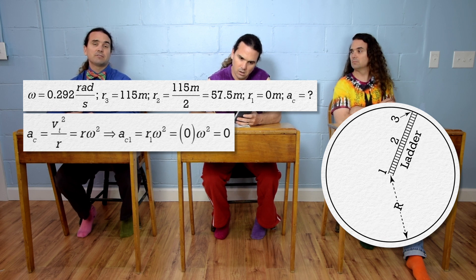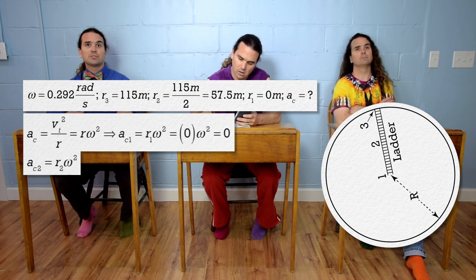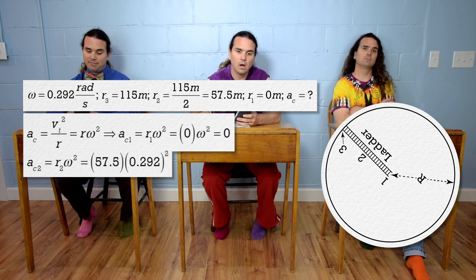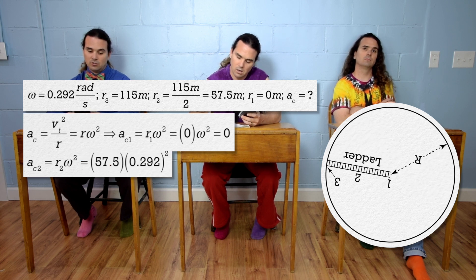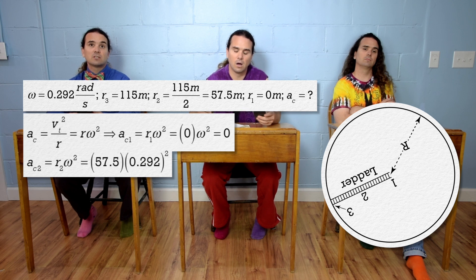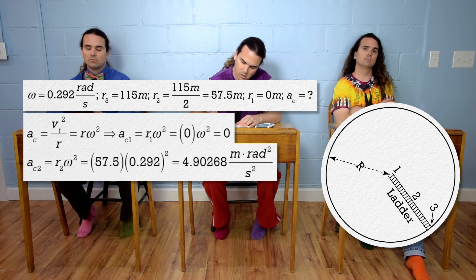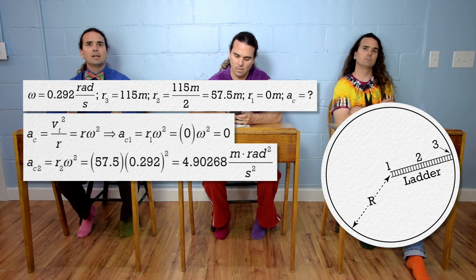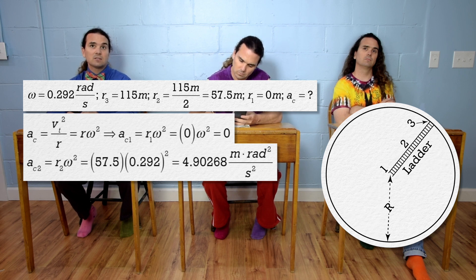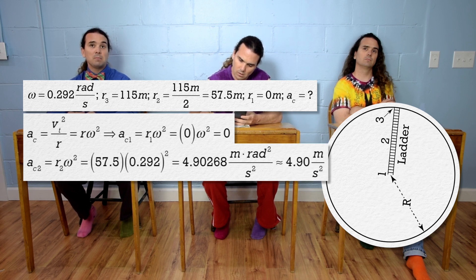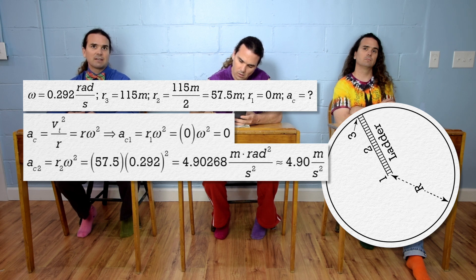The centripetal acceleration for part 2 equals 57.5 times 0.292 squared, which is 4.90268 meter radians squared over seconds squared, and radians have no units, so it is just 4.90 meters per second squared, with three significant digits.